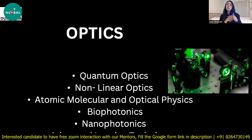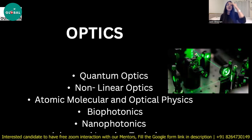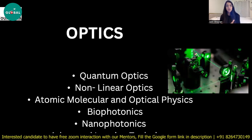For example, the Max Planck School of Photonics and the Rothschild Institute in the USA are specially dedicated to optics. In this field you can do research in certain areas — for example, quantum optics is a newer area in which you research photons and can do sensing using them.